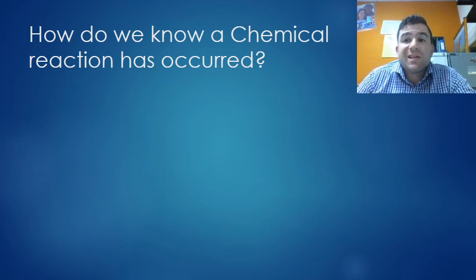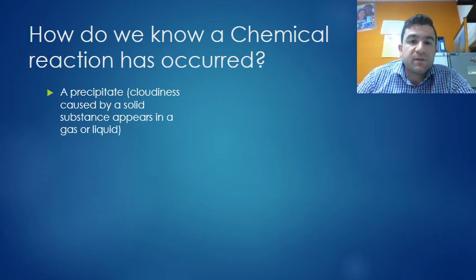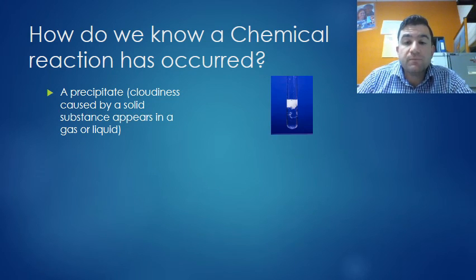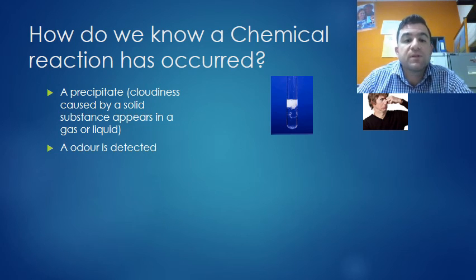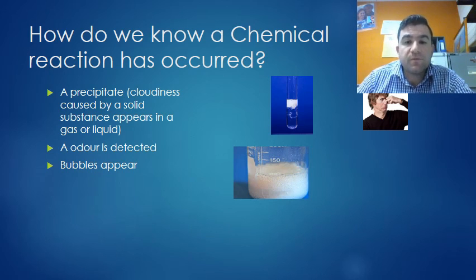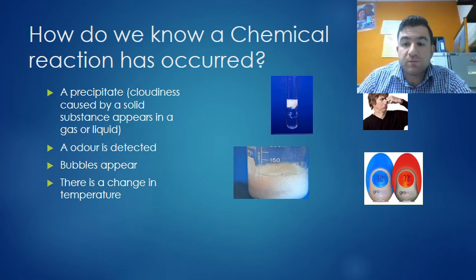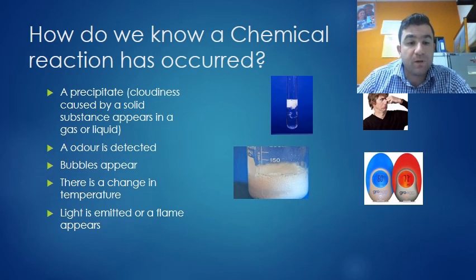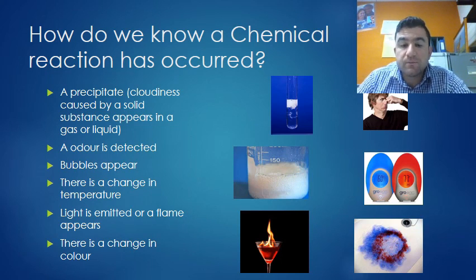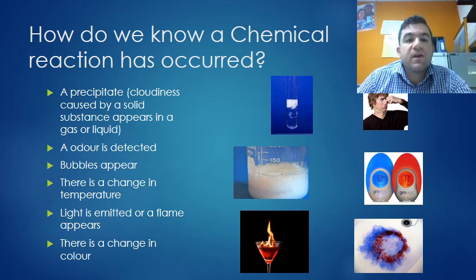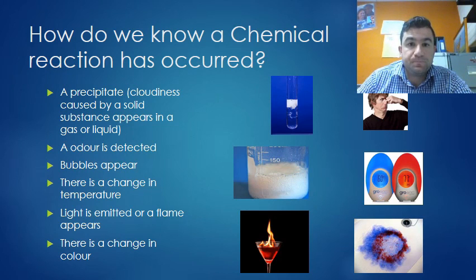How do we know if a chemical reaction has taken place? What do we look for to see if a chemical reaction is taking place? A precipitate - this is a cloudiness caused by a solid substance appearing in a gas or a liquid. An odor is detected - something smells. Bubbles appear - very obvious. There's a change in temperature, so it's either cooling or heating up. Light is emitted or a flame appears. There's a change in color. So there are all indicators of a chemical reaction, things to look for.